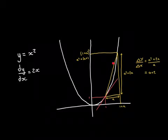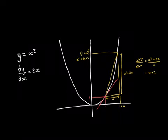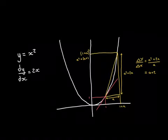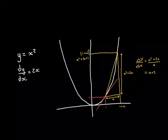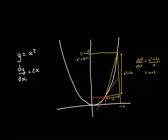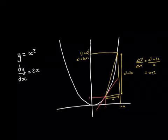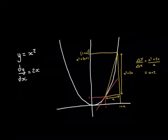If we can get a general formula, we can imagine making a smaller and smaller to get a better and better approximation. Note that a cannot equal 0 — the whole thing means nothing if a equals 0. If you go forward by 0 you stay at the same point and the secant line means nothing. But a can be any other value, positive or negative.